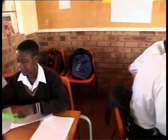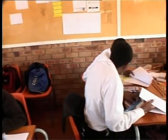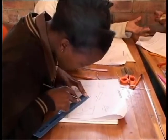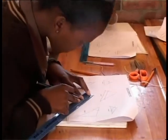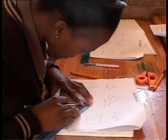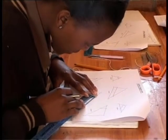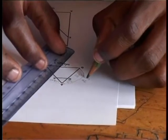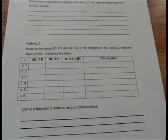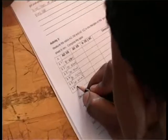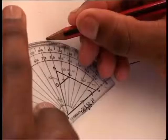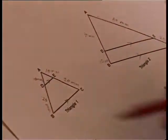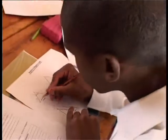In this activity learners are given worksheets to complete. They have to measure the ratios of the sides of triangles divided by parallel and non-parallel lines. Learners measure the length of the line segments and fill in the ratio. They also measure the angles and use equal corresponding angles to determine if the lines are parallel.